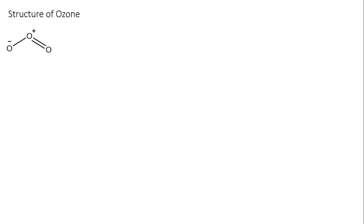Before going into too much detail of the reaction, let us study the structure of an ozone molecule. The ozone molecule is a dipolar molecule. As you can see, there is a negative charge and a positive charge on adjacent oxygen atoms, but it is a special type of dipolar molecule. Let us see how. This is oxygen 1, this is oxygen 2, and this is oxygen 3.